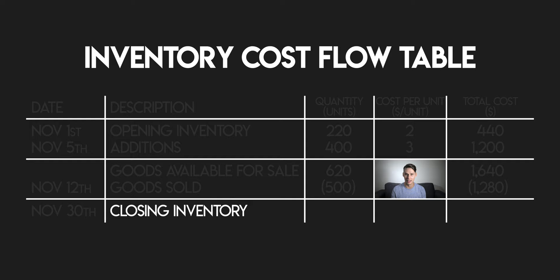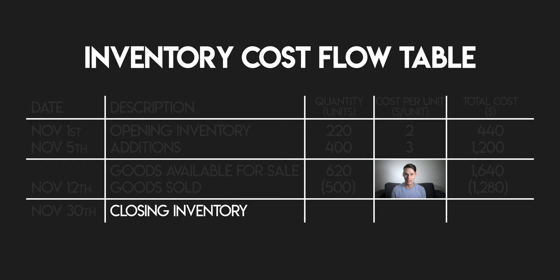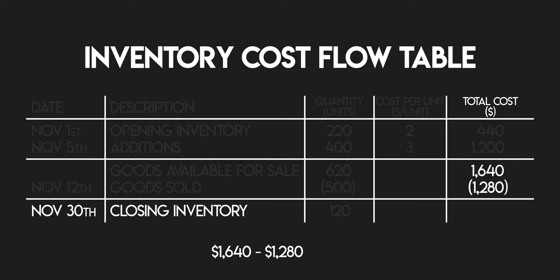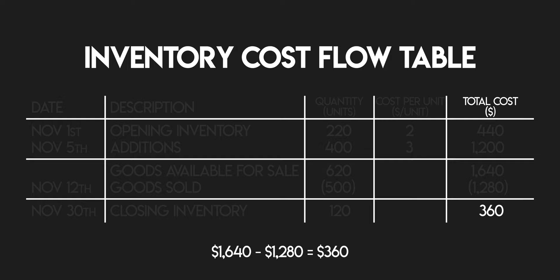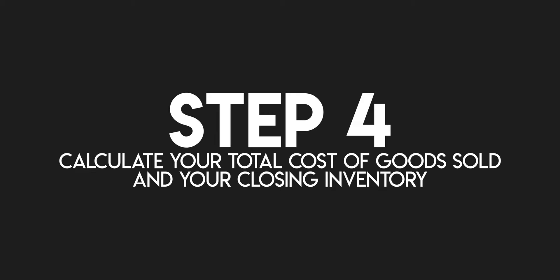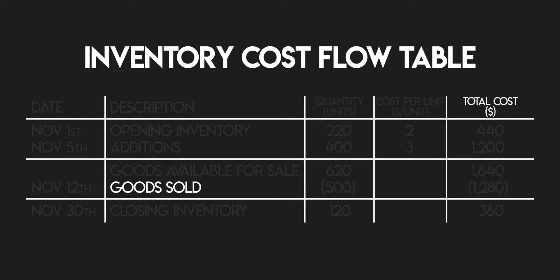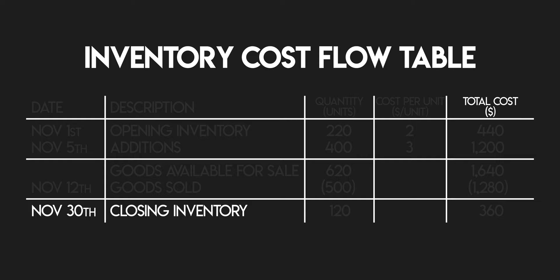Now let's take some totals to find out your closing inventory on November 30th. 620 minus 500 gives you 120 units, and $1,640 minus $1,280 gives you $360 — your total cost of closing inventory. Step four: calculate your total cost of goods sold and your closing inventory. Your total cost of goods sold for the month is calculated by adding up your cost of goods sold for each sale. Here, you've only made one sale, so your total cost of goods sold for November is $1,280, and the total cost of your closing inventory is $360.